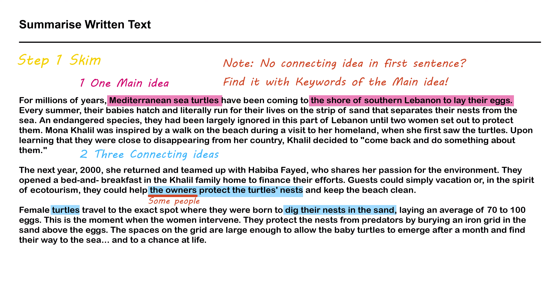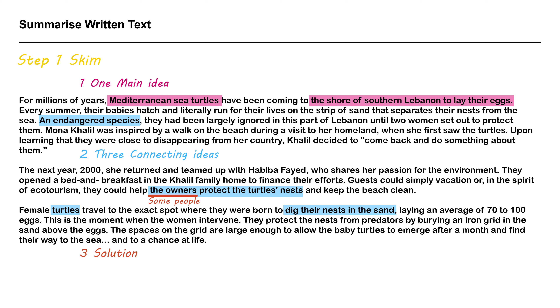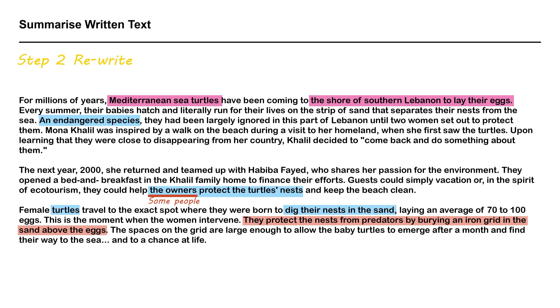So, let's look at what we have and think about what other information we might need. Firstly, why are some people protecting the turtles? We should make that clear. So go back to the text and find that. And here we see 'an endangered species.' So we could add this connected idea: the turtles are an endangered species. And now we have three connecting ideas. Now let's skim for the third thing — a solution. We actually already have a solution: some people protect the turtles. But maybe we can find out more about the solution. Let's look in the last paragraph. And here it is: they protect the nests from predators by burying an iron grid in the sand above the eggs.